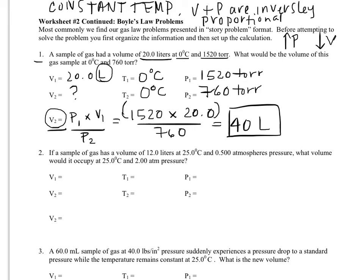Next question. A sample of gas has a volume of 12 liters at 25 degrees Celsius and 0.5 atmospheres of pressure. So again, you need to be able to recognize the different units of pressure. Again they want to know what's the new volume gonna be when it's still at 25 degrees Celsius.